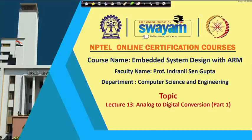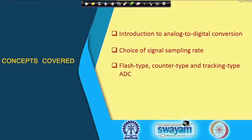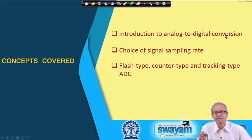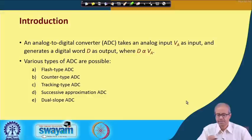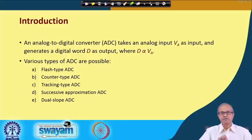In this lecture, we shall be starting our discussion on Analog to Digital Conversion. If you recall in our previous lecture, we discussed the reverse process — how to convert a digital value into an equivalent and proportional analog value, the so-called digital to analog conversion. This lecture is titled Analog to Digital Conversion, Part 1. We shall first talk about some basics of AD conversion, signal sampling rate, and some alternate AD converter designs: flash type, counter type, and tracking type.